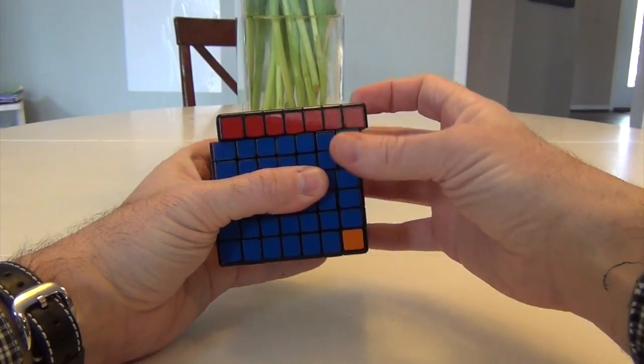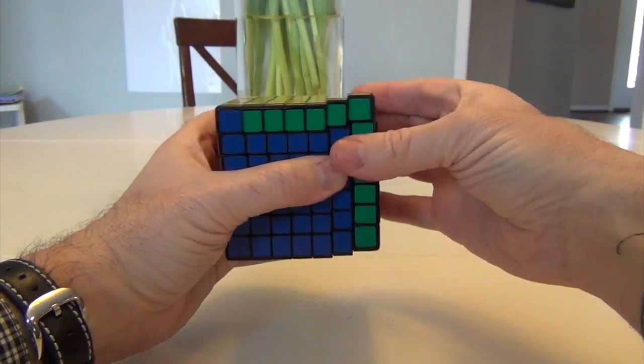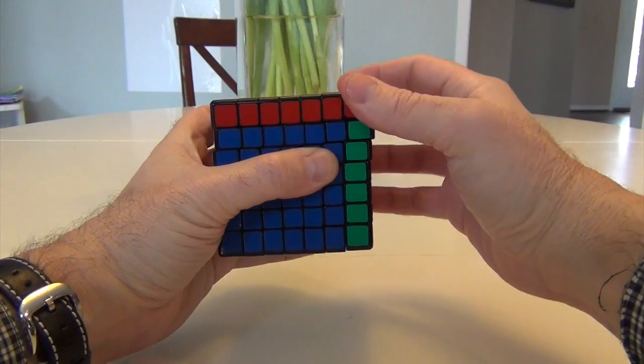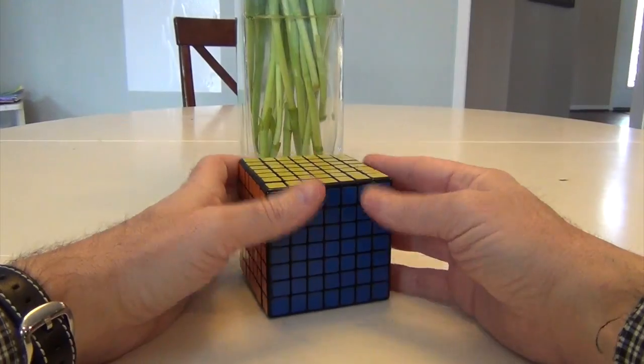Move this so that this is in front of us, and then we do edge swapping here, an adjacent edge swap. 2R U 2R U 2R 2U 2R 2U 2R U' 2R. And lo and behold, it is done.